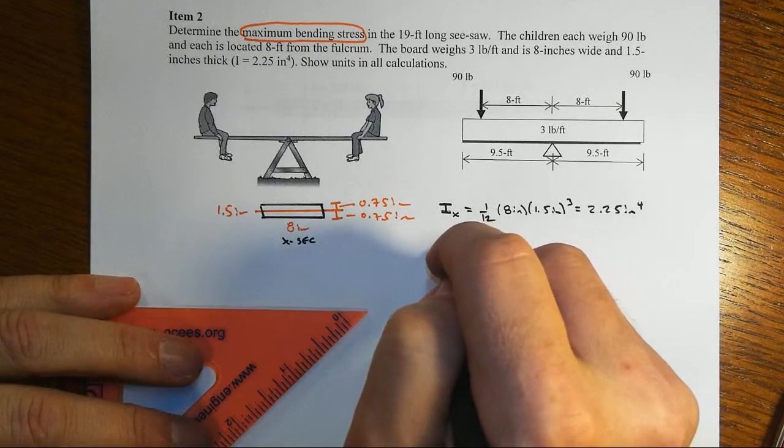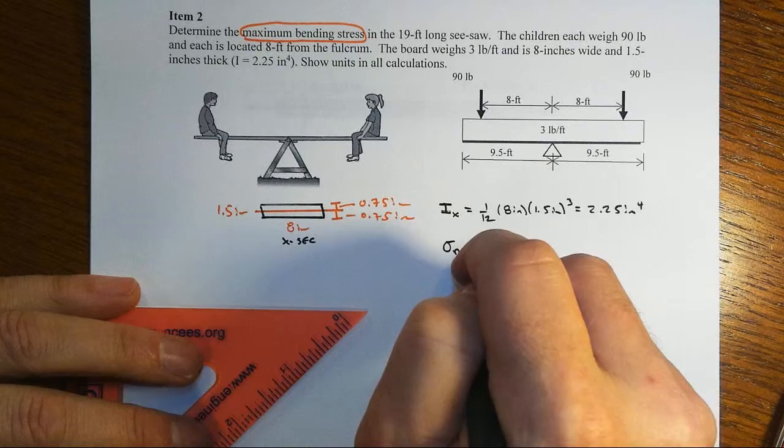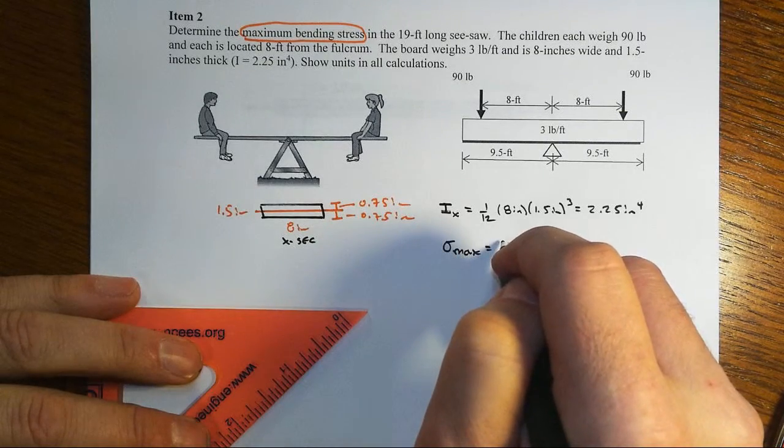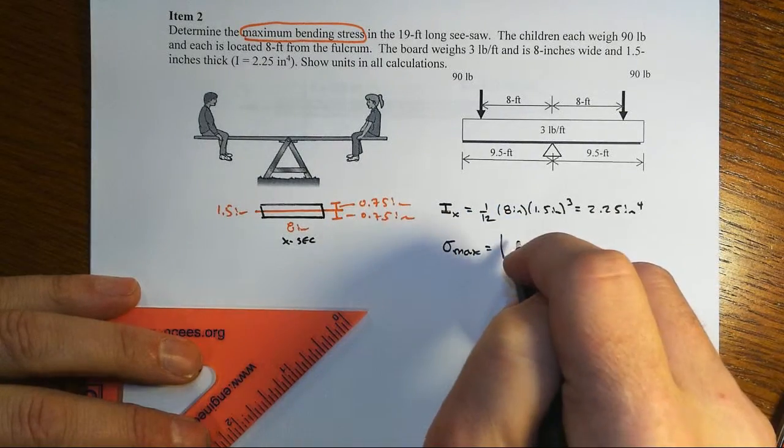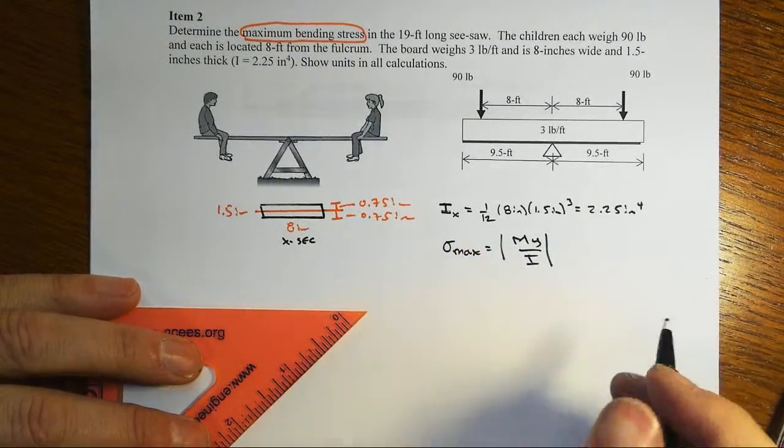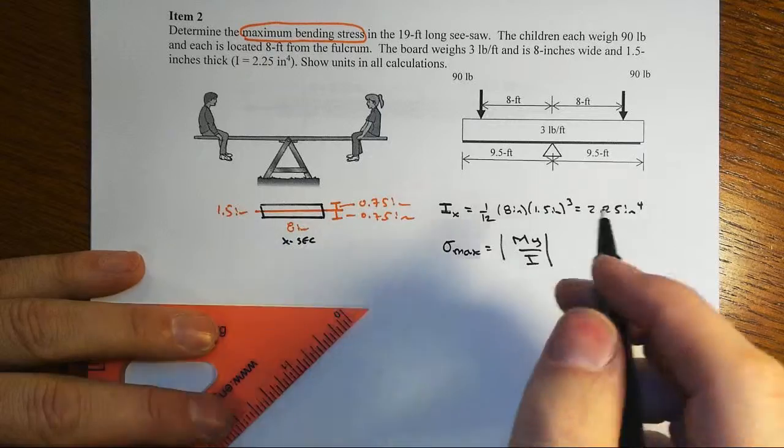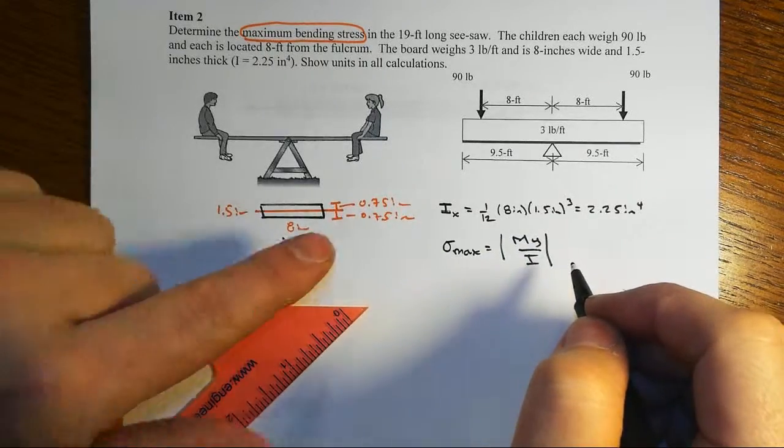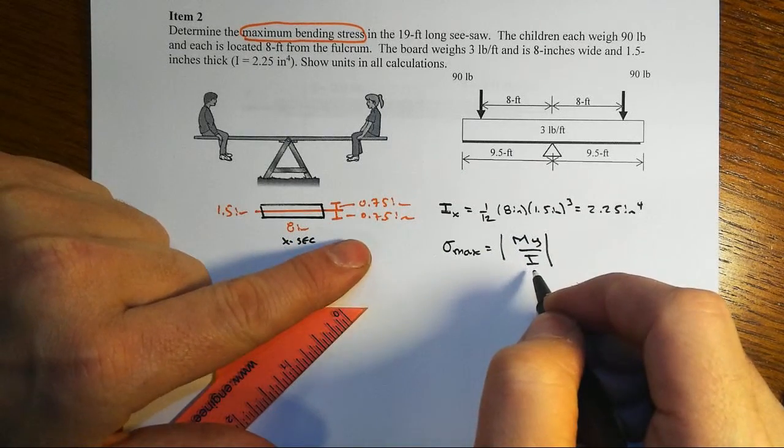We want the maximum bending stress, so that means we want to look at the maximum of σ = My/I. And that means with a constant cross-sectional beam, that I doesn't vary along the length of the beam.